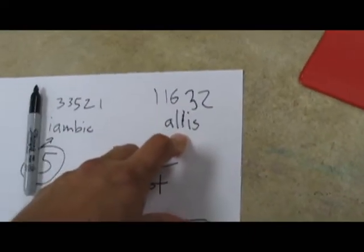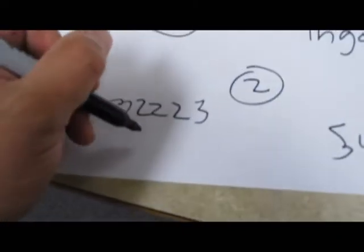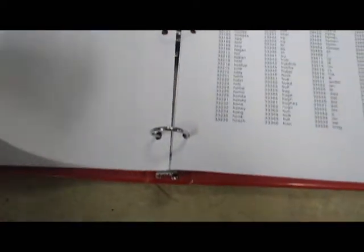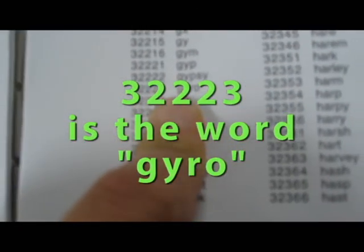It's time for my fifth word. Rolled three, two, two, two, three. That's our fifth word. Let's look it up. It's the word gyro. Kind of like you'd eat at the mall.